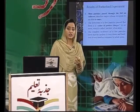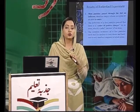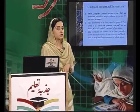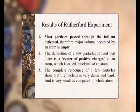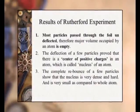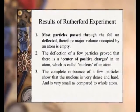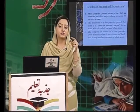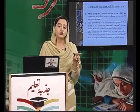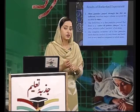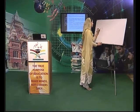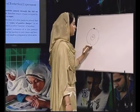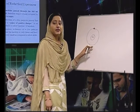Rutherford نے یہ بھی کہا کہ nucleus میں proton پایا جاتا ہے اور positive charge nucleus میں ہوگا۔ Complete rebounds جو ہیں کچھ particles کا nucleus سے ٹکرانے کے بعد یہ بتاتا ہے کہ nucleus بہت dense بھی ہے اور hard بھی ہے اور atom کا ایک بہت چھوٹا حصہ ہے۔ Atom کا structure ہم کچھ اس طرح draw کرتے ہیں کہ center میں ایک circle ہے جو nucleus کو show کرتی ہے اور electrons اس کے گرد revolve کرتے ہیں۔ Normally ہم جو atom کا structure draw کرتے ہیں وہ اس طرح ہوتا ہے کہ یہ center میں nucleus ہے اور باہر orbit ہے جس کے اندر electron move کر رہا ہے۔ آج ہم جانتے ہیں کہ nucleus میں proton کے ساتھ neutron بھی ہوتے ہیں۔